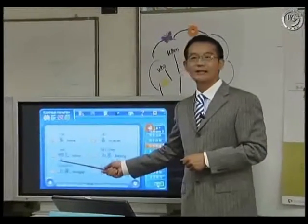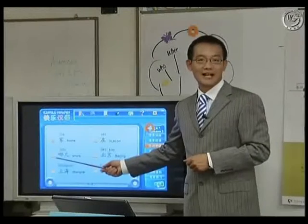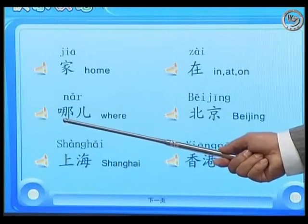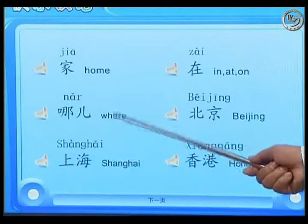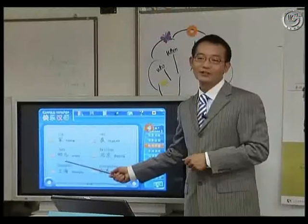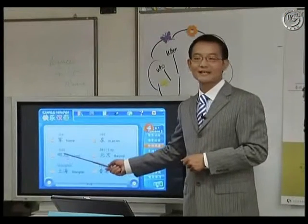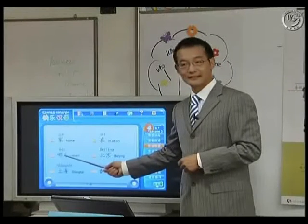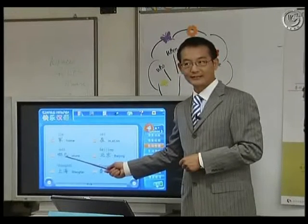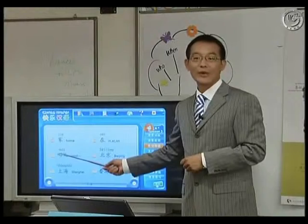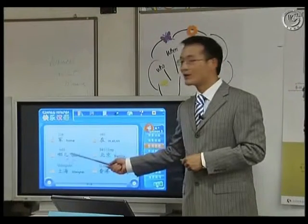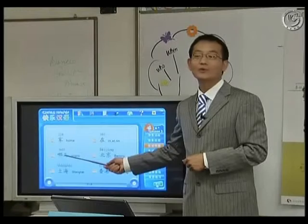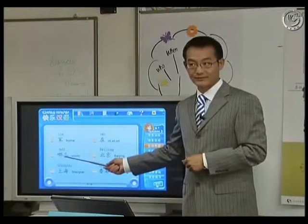Now the third one, 哪, 哪, 哪 — 哪 means where, okay? We have learned another one last week: 哪 without 儿, right? That one means where. This one, 哪 means which, okay?